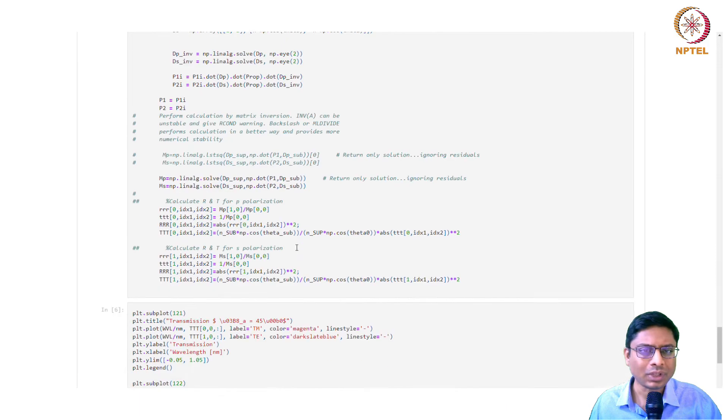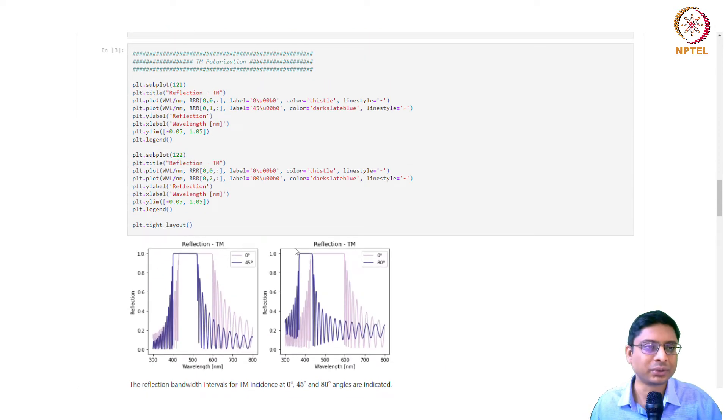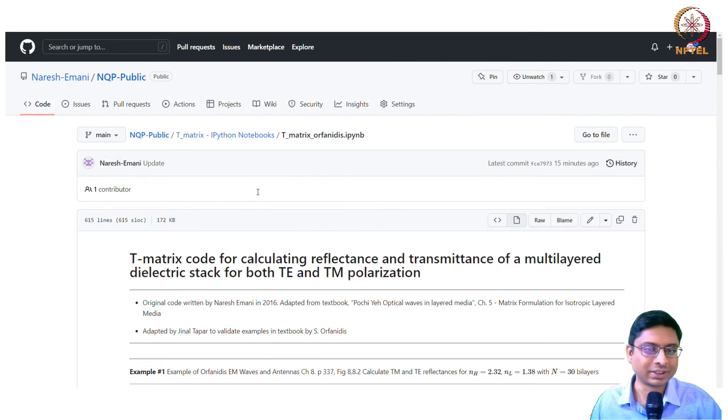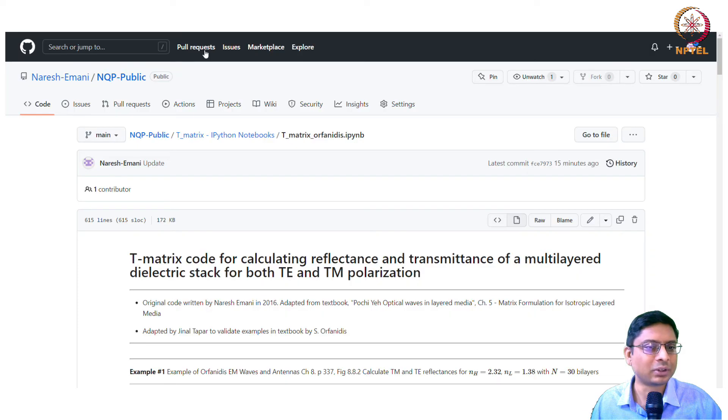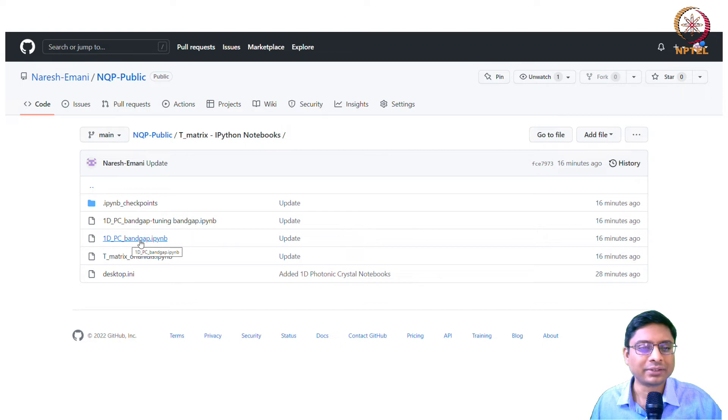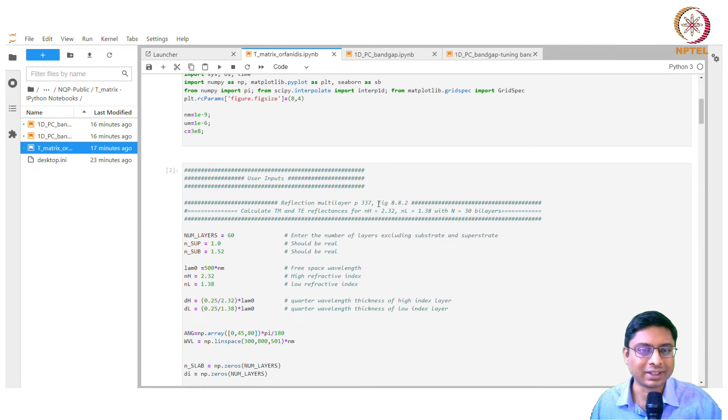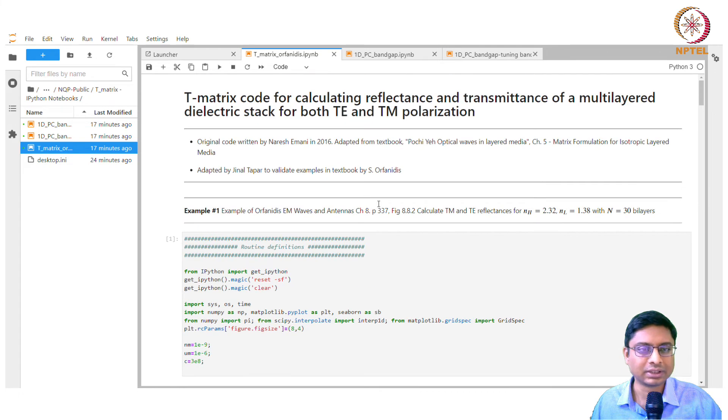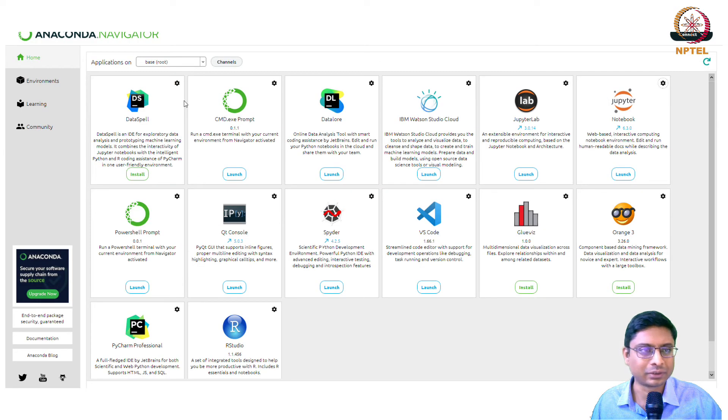One more example is the polarizer example, wherein we show that at 45 degrees, most of the TM polarization goes into transmission, nearly one, whereas TE polarization gets reflected. You can use this to adapt to your own applications. Anywhere you have layered structures, you can use this code. It's freely available online. Now, we also have the 1D photonic crystal example notebook.